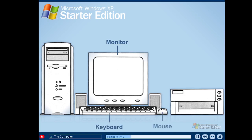The keyboard and mouse are how you communicate with your computer and how you enter information. You use the keyboard to type and enter text and numbers. The mouse allows you to select and interact with items you see on the computer screen.